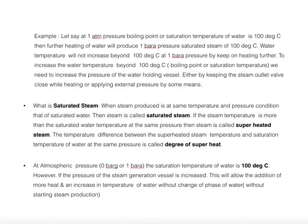There is also the concept of saturated steam. When steam is produced at the same temperature and pressure conditions as the saturated water, it is called saturated steam. If the steam temperature is more than the saturated water temperature at the same pressure, then the steam is called superheated steam. The temperature difference between the superheated steam temperature and the saturation temperature of water at the same pressure is called the degree of superheat — meaning the difference between the temperature of saturated water and the temperature of superheated steam.